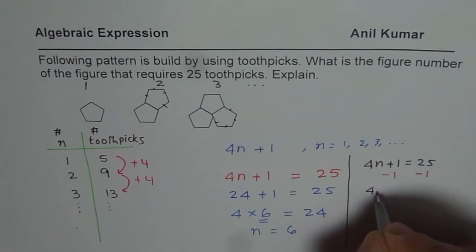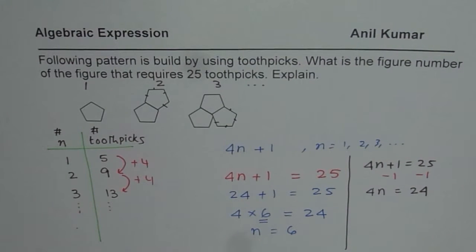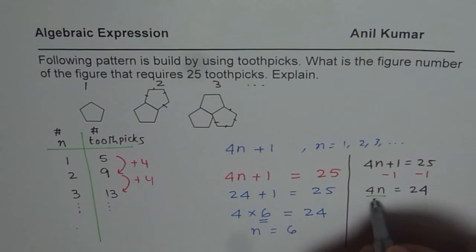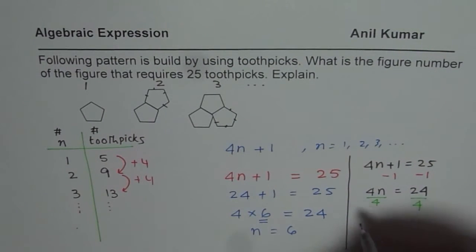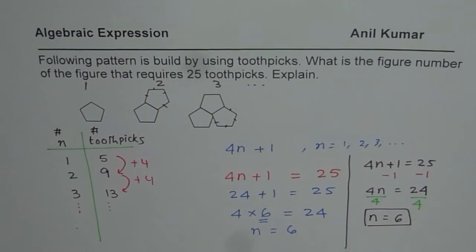you could write this as 4N equals to 25. Take away 1 is 24. And then you divide by 4, right? So then you divide by 4 each side. And once you do that, you get N equals to 24 divided by 4, which is 6. So you get N equals to 6 as your solution. So that would be an algebraic solution for this expression.